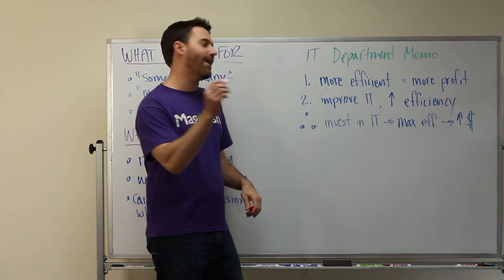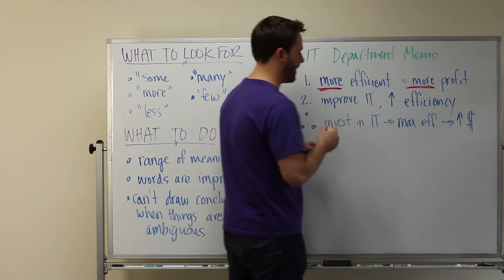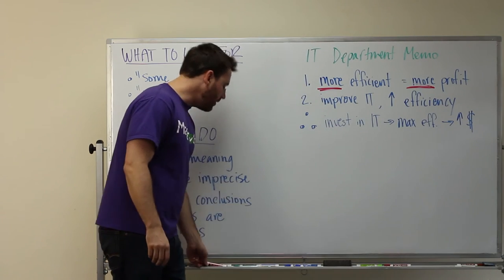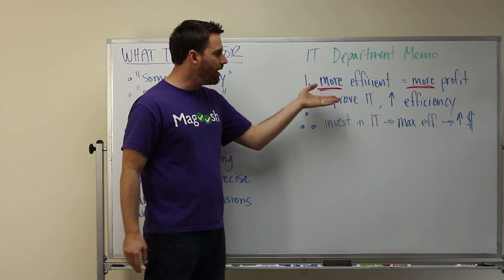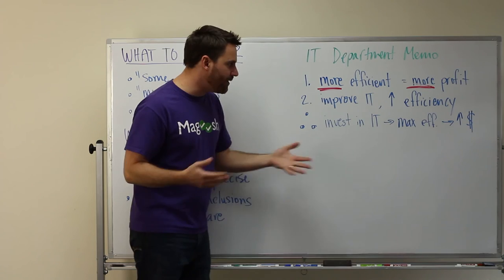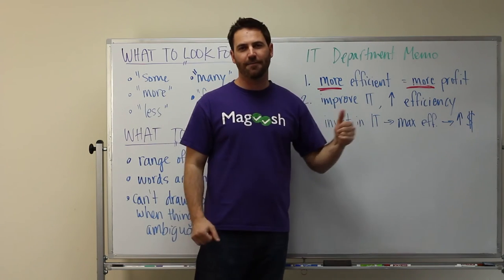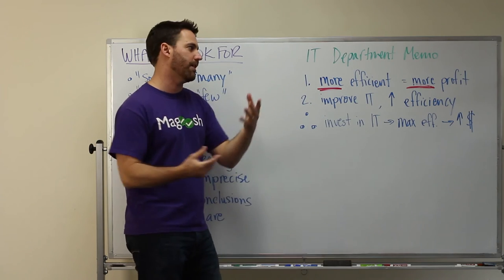Then they say if you improve IT you're going to increase efficiency and the conclusion is thus you should invest in IT because you'll maximize efficiency and you'll increase your profit margin. So hopefully you notice right at the beginning we've got some of our vague words right here and so what you'd want to do if you were to see this argument is talk about how much efficiency are we talking about? How much more efficiency do you need in order to have more profit? What are the actual gains here? What are the actual numbers?